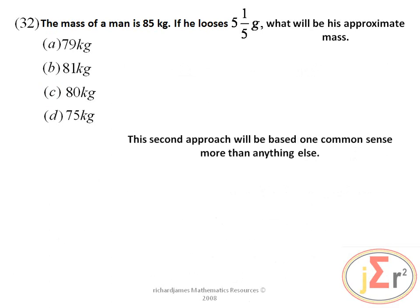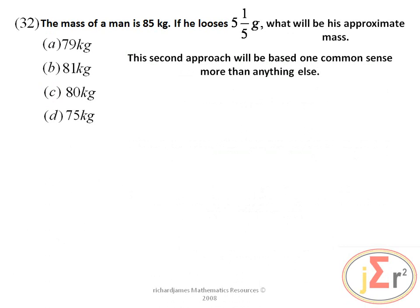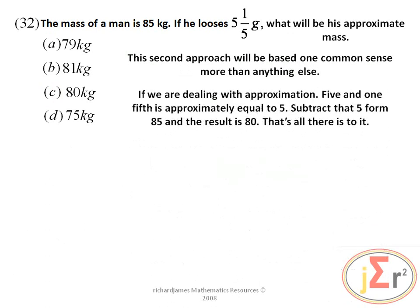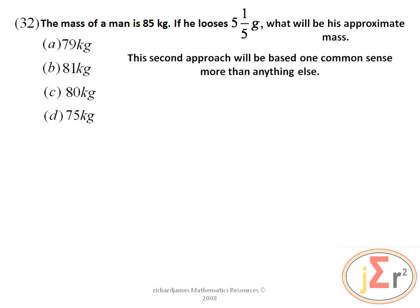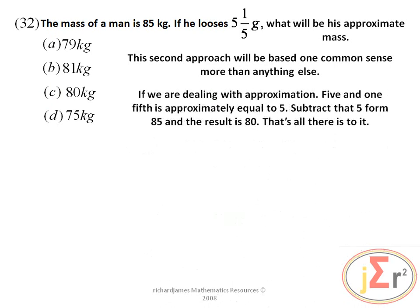The second approach is based on common sense. If we are dealing with approximation, 5 and one-fifth is approximately equal to 5. So we subtract 5 from 85 and the result is 80. That is all there is to it, and the answer is option C.